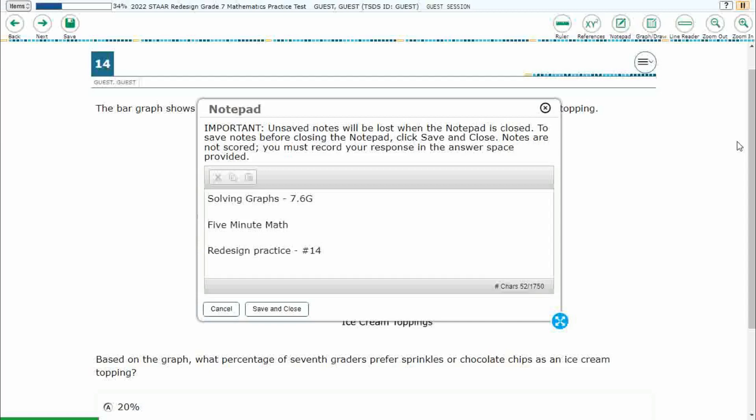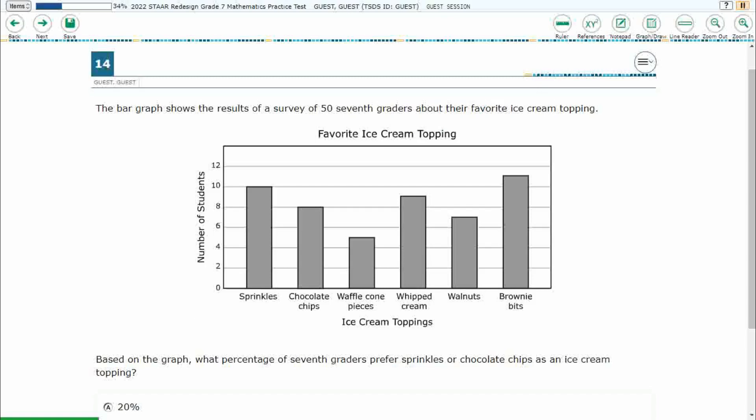Hello and welcome to 5-Minute Math. Today we are looking at the seventh grade concept of solving graphs. This is standard 7.6G in the great state of Texas and we are using item number 14 off the redesigned practice online STAAR test.